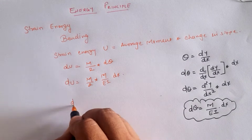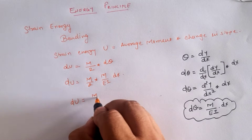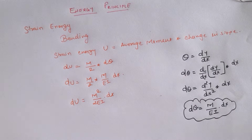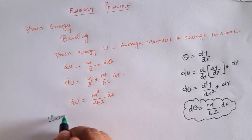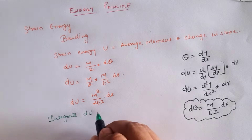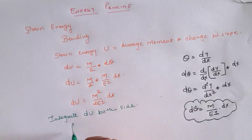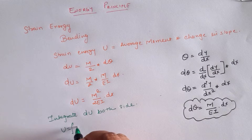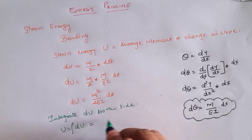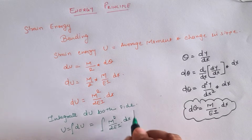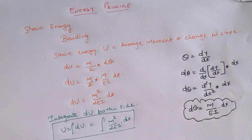Hence the strain energy stored in the material is dU = M²/(2EI)·dx. To get the total strain energy over the whole element, we integrate both sides, giving total strain energy U = ∫M²/(2EI)·dx. This equation is going to be used for Castigliano's theorem.